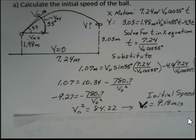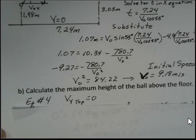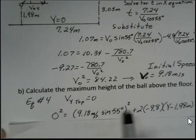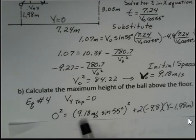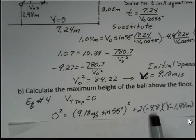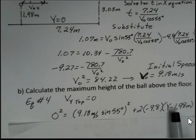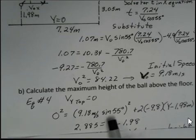Including the angle makes it a velocity. We can also calculate the maximum height using kinematic equation number 4, which involves the square of the velocities. At the top of the motion the vertical velocity is temporarily zero. Here is the y component of the initial velocity: 9.18 meters per second times sine of 55 degrees, squared. Acceleration due to gravity is negative, and we have y minus 1.98 to find how high the ball goes at its maximum.